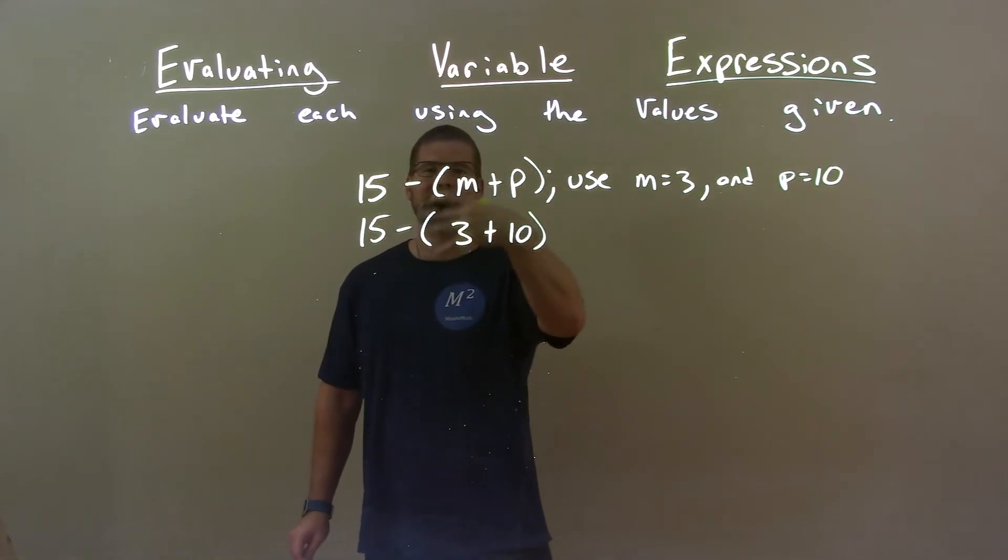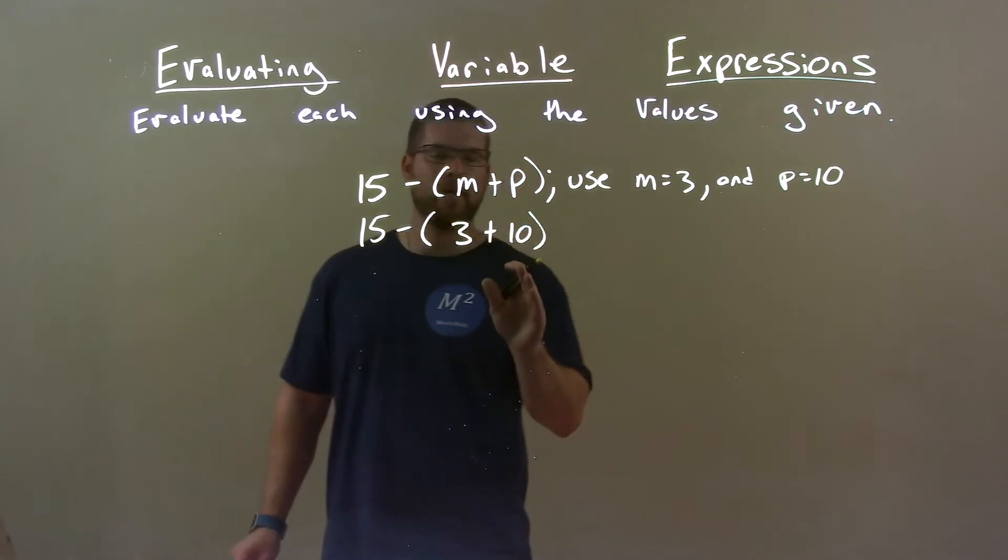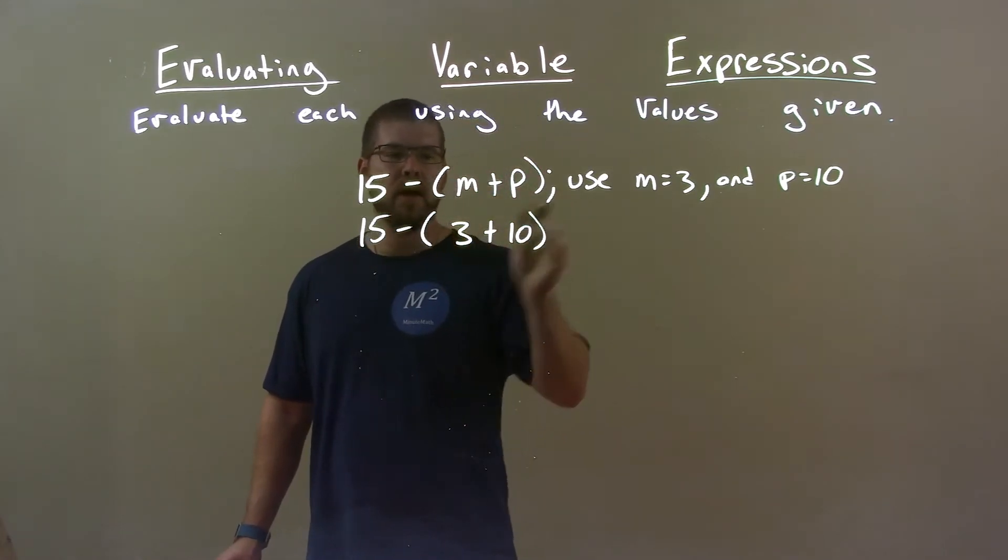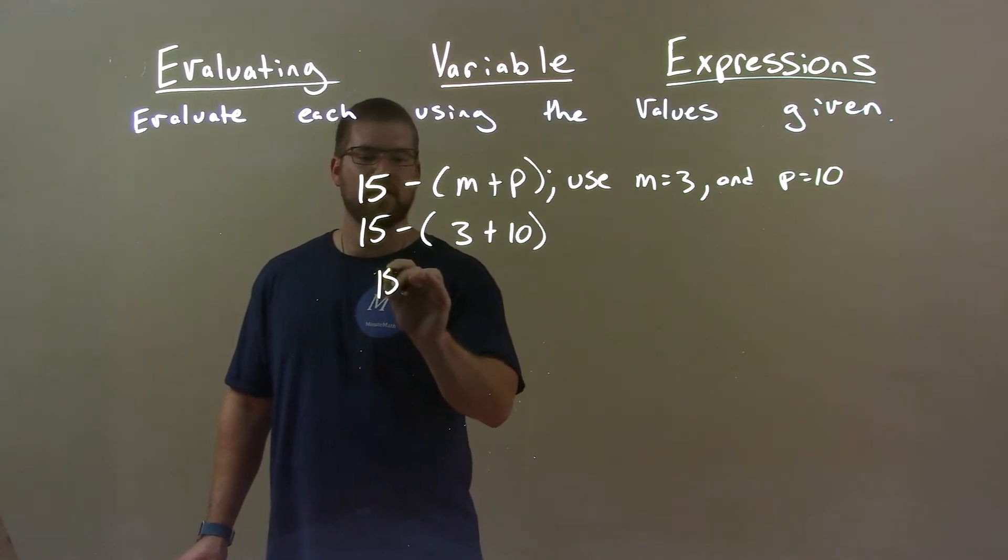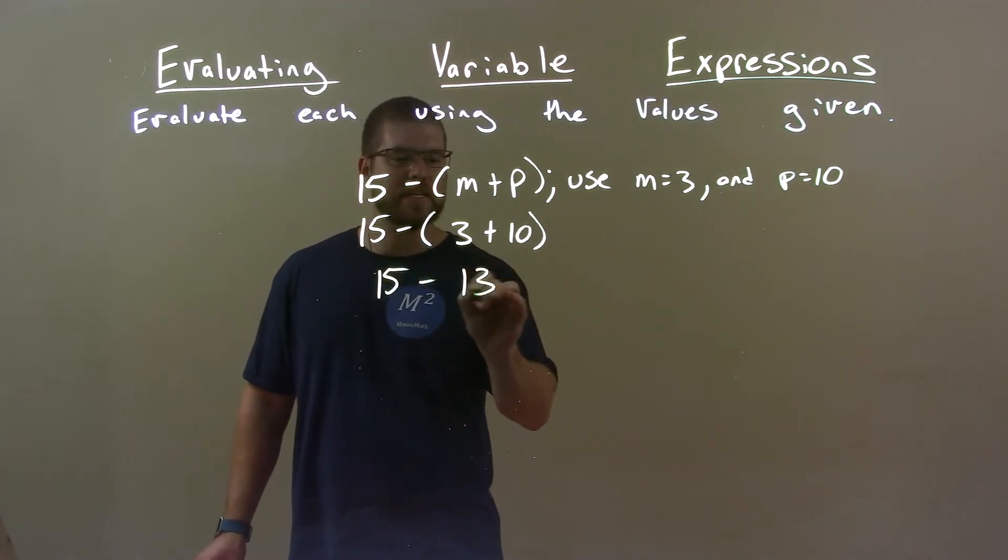Now, we just simplify. 3 and 10, we add them first because they're in our parentheses. 3 plus 10 is 13. So, 15 minus 13 here. Okay?